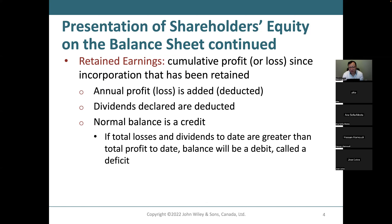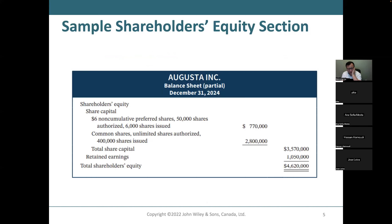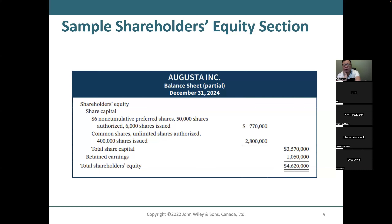Retained earnings — we just mentioned about this. So if you take a look at this partial balance sheet, it's only showing the shareholders' equity. You can see share capital: $6 non-cumulative preferred shares, 50,000 shares authorized, 6,000 issued — dollar amount $770,000. Common shares: unlimited shares authorized, 400,000 shares issued — $2.8 million. There's no contributed surplus. Your total contributed capital is $3.57 million, and retained earnings is $1.05 million, making total shareholders' equity $4.62 million.